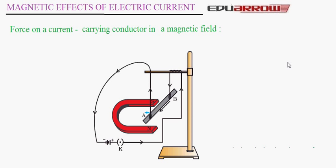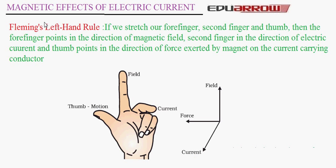Let us now discuss Fleming's left hand rule, which is used to find the direction of force exerted by a magnet on a current-carrying conductor. Remember that when the magnetic field and current are perpendicular, the force is perpendicular to both of them. According to Fleming's left hand rule, if you stretch your forefinger, second finger, and thumb such that all three are perpendicular to each other, then the forefinger points in the direction of the magnetic field, the second finger in the direction of electric current, and the thumb points in the direction of force exerted by the magnet on the current-carrying conductor.